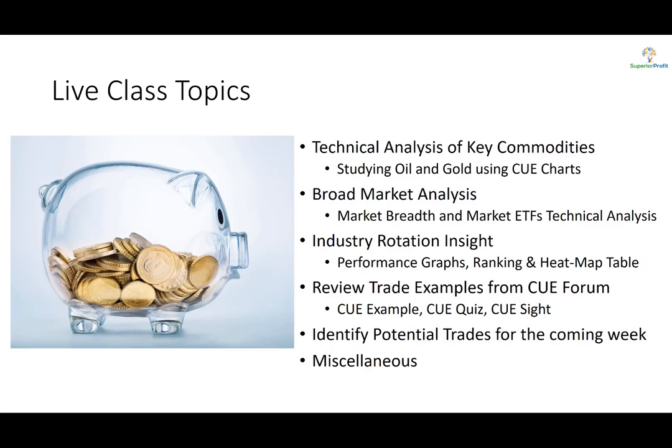In today's topics we will look at key commodities — oil and gold — using Q charts. We will study the broad market in terms of market breadth and ETF technical analysis to assess whether the market is bullish or bearish. The market consists of multiple industries that tend to rotate from strength to weakness based on factors including government policies, technological advances, and commodity supply disruption. We look at industry rotation using performance graphs, ranking, and heat map tables to align our trades with the direction of the industry.